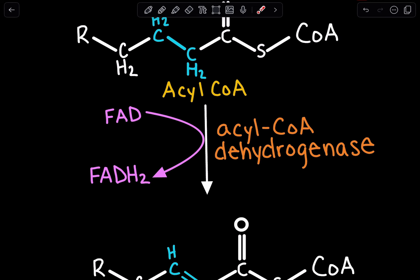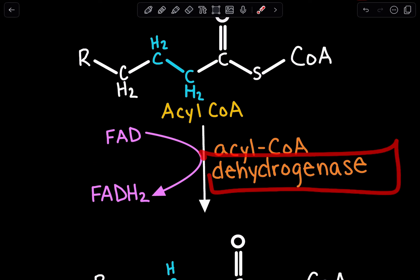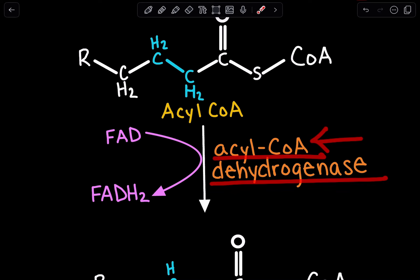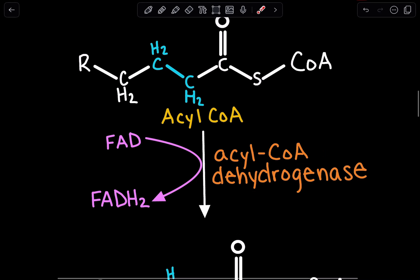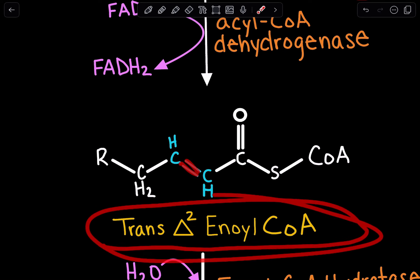The first step is that we need to create a double bond between the alpha and beta carbons. We do this via an oxidation-reduction reaction — a redox reaction. Whenever we think about a redox reaction, we use a dehydrogenase, and FAD or NAD will be involved. The enzyme is acyl-CoA dehydrogenase, and FAD is reduced to FADH2. As a result, we oxidize the bond and get a double bond, forming trans-Δ2-enoyl-CoA.